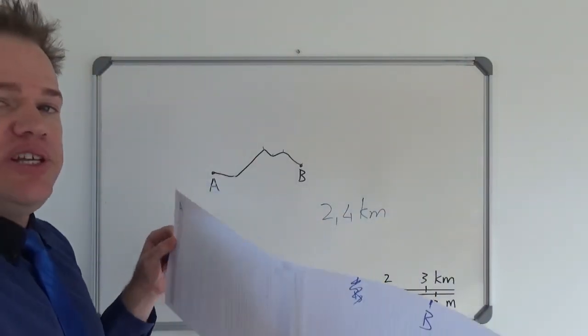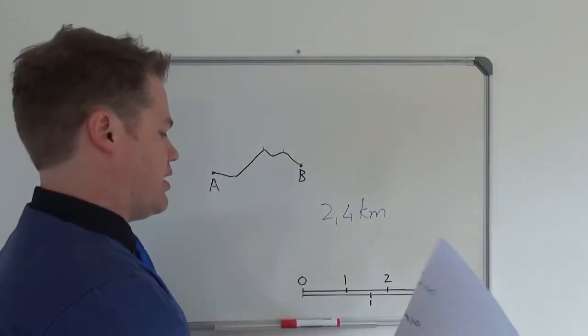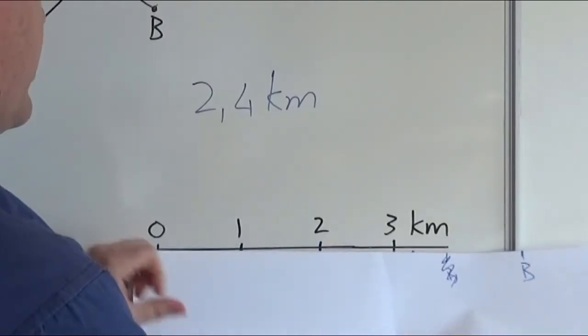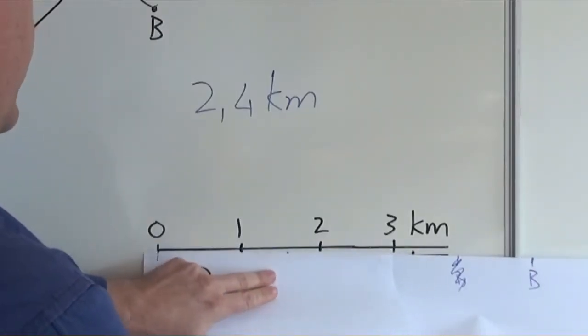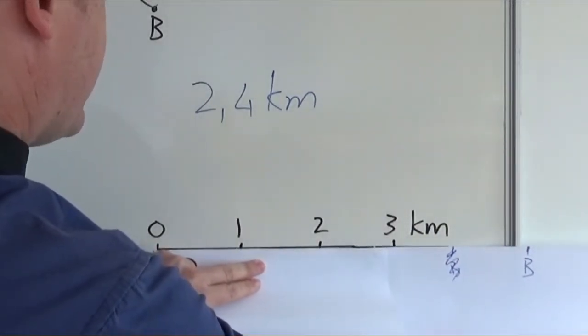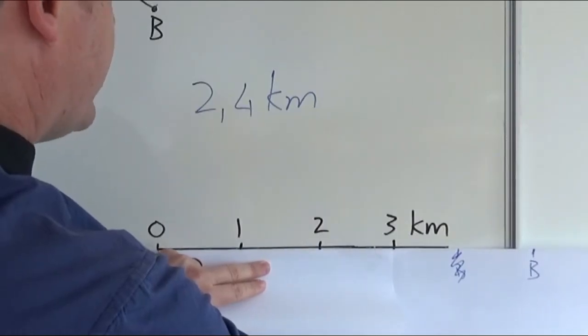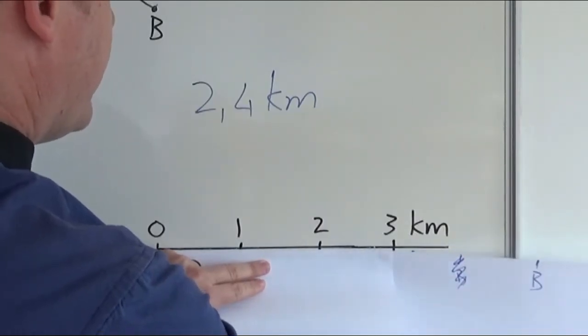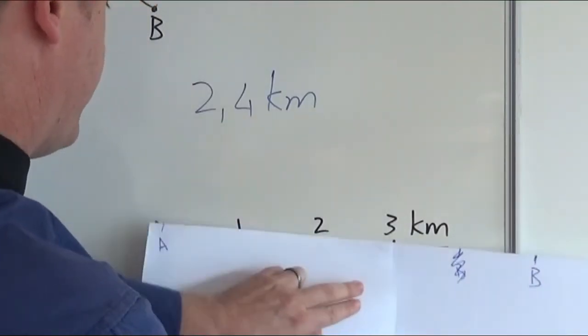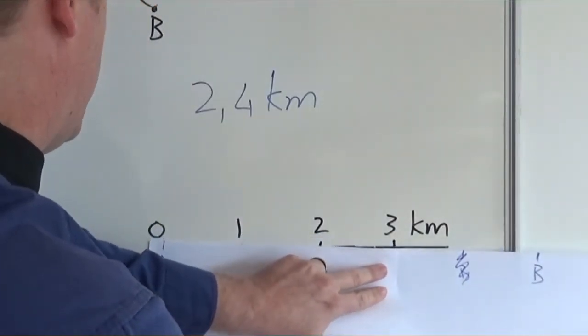Right, so we have a bigger piece of paper and we are going to hold it just below this line here. As you can see we have B right there and we can't really measure it. So what we will do is the following. We will go up to 3 kilometers. That's the maximum distance we can go.